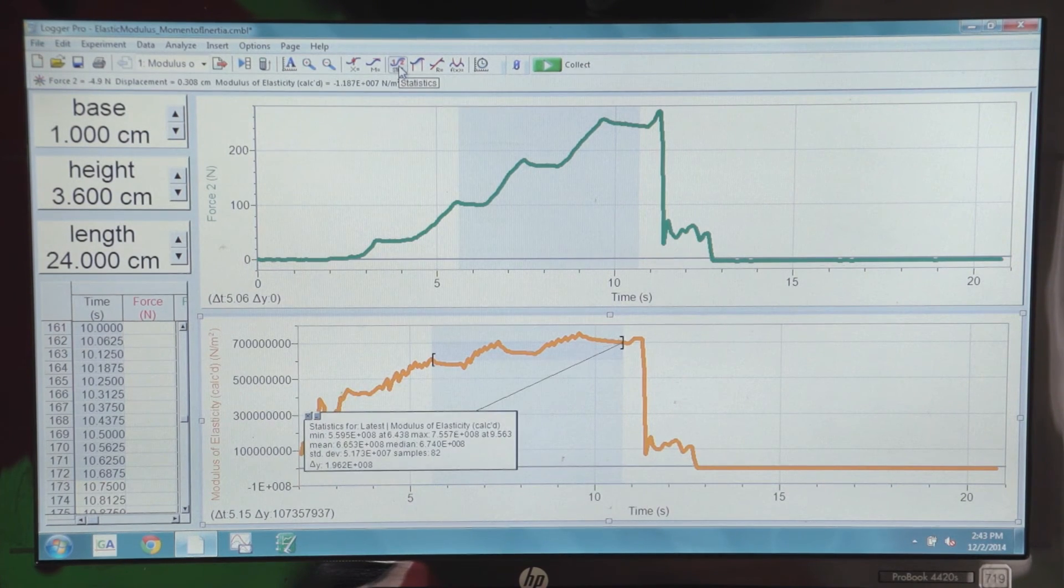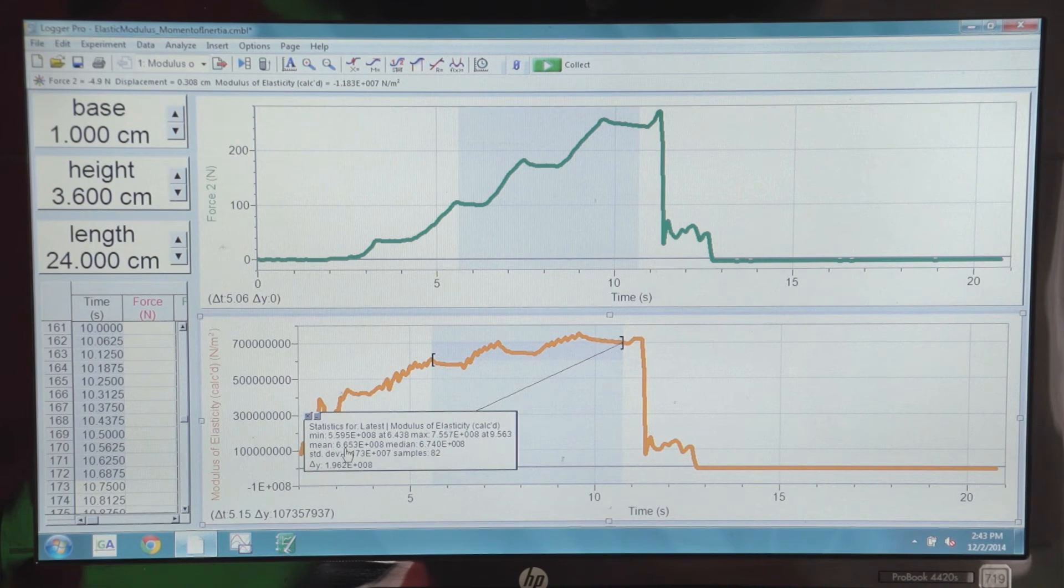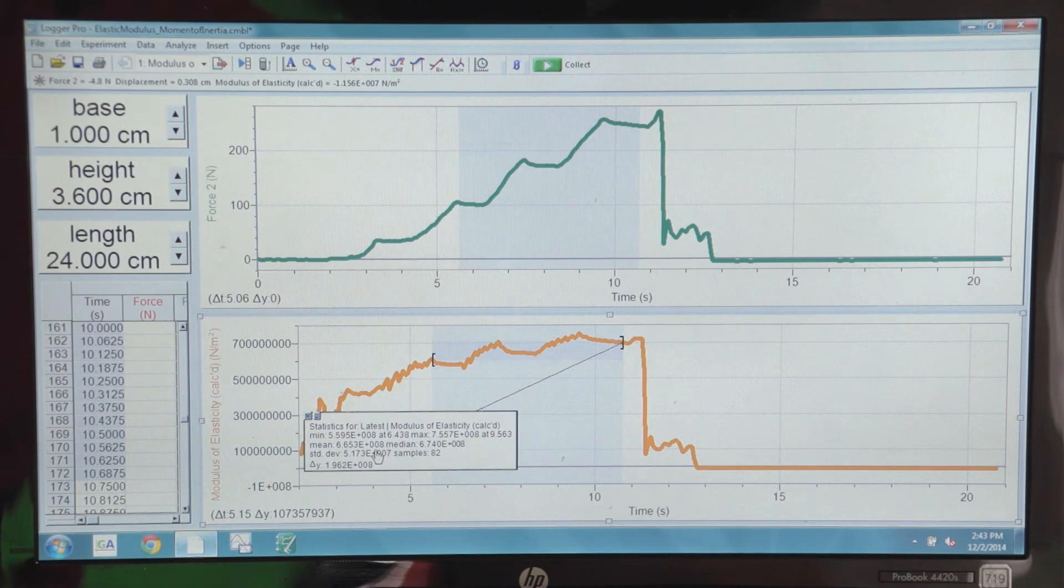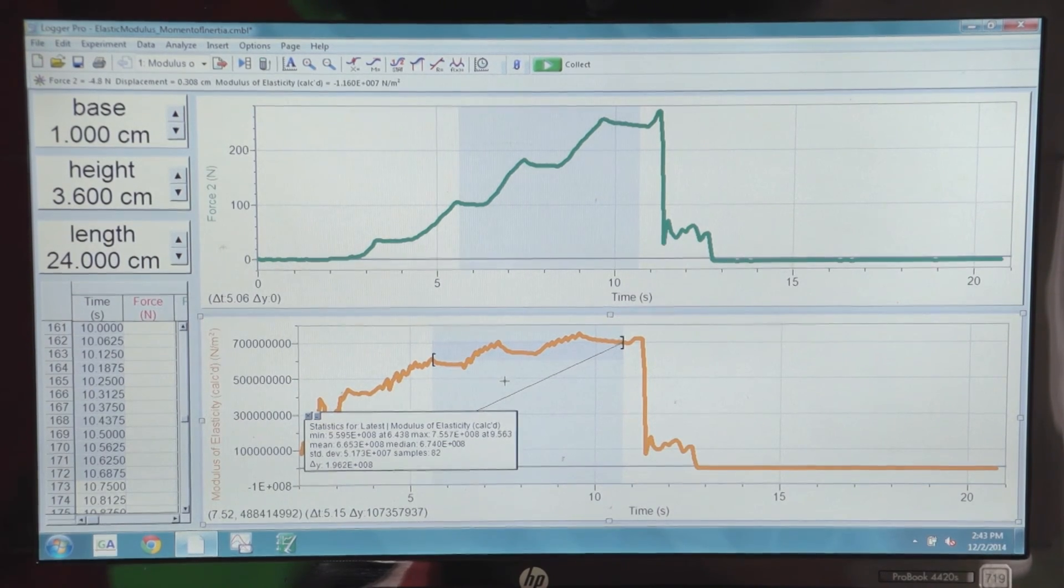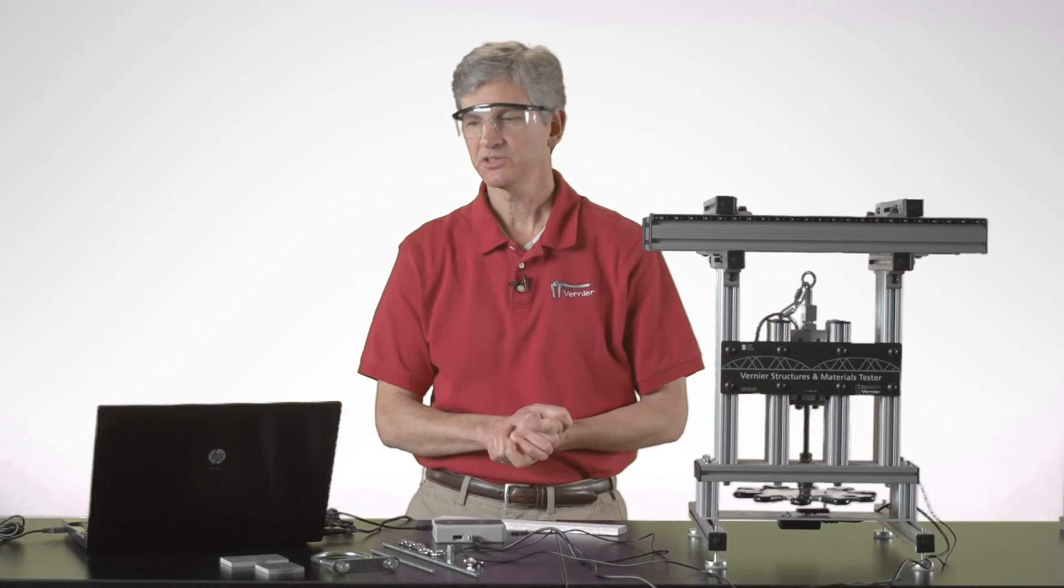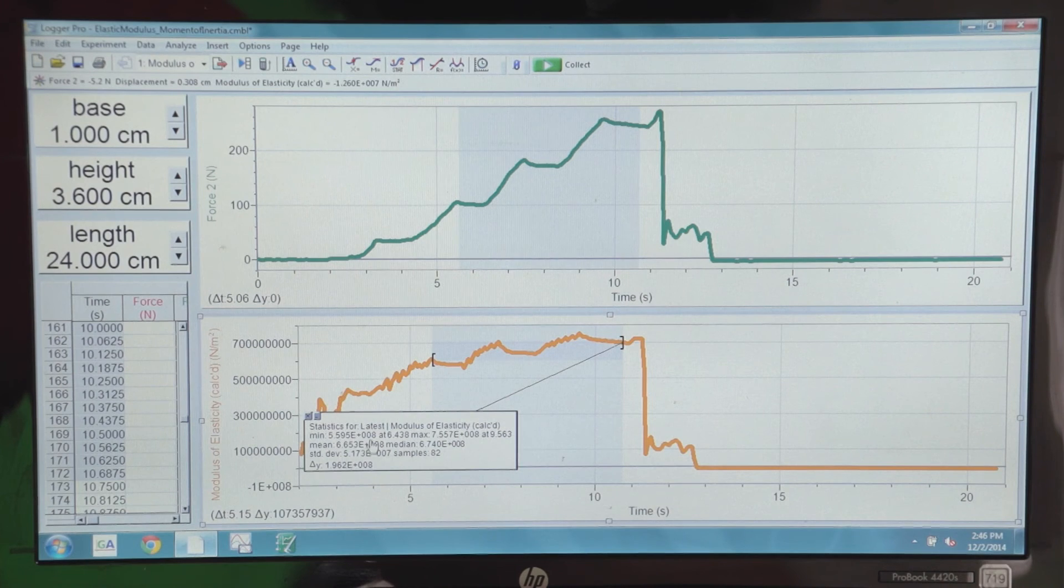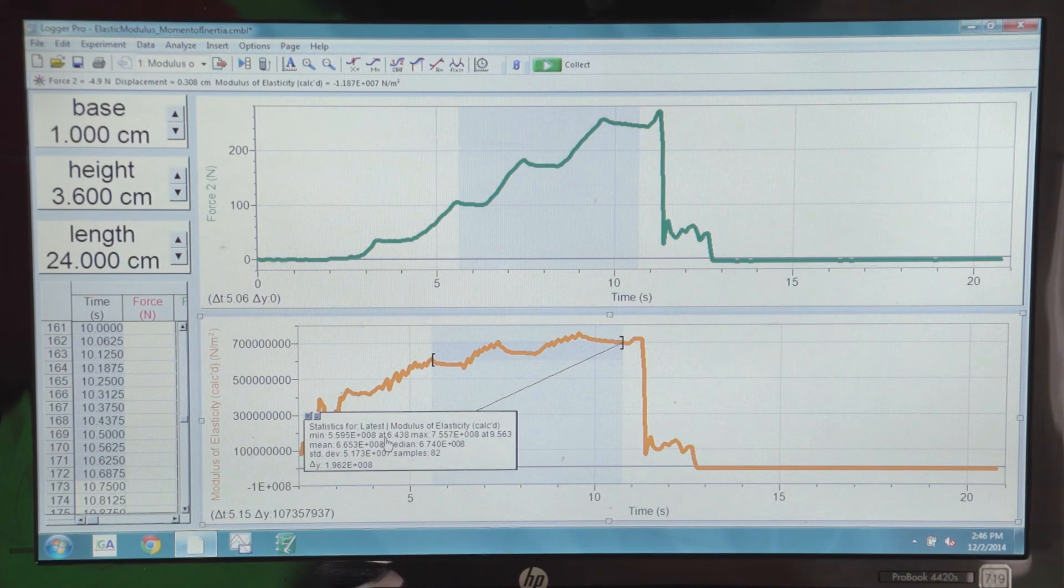If we take a look at the stats button, we can see that the statistics would tell us an average modulus of elasticity of 6.6 or 6.7 times 10 to the eighth pascals, or newtons per meter squared. So in this experiment, we were able to determine the modulus of elasticity for this particular beam. And we determined that we're looking at about 5.6 times 10 to the eighth pascals or newtons per meter squared for the modulus of elasticity for a rectangular beam.